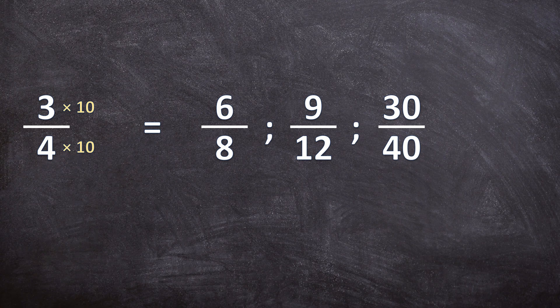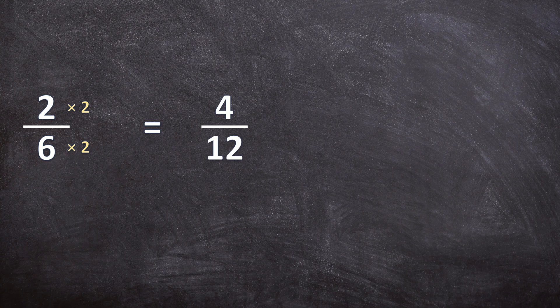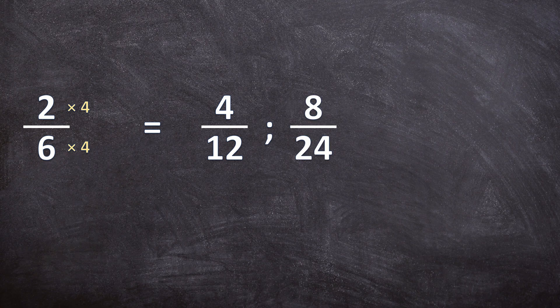Let's look at one more example. For this example, you can also find an equivalent fraction in another way, but I'll show you that lastly. First, let's multiply the numerator and the denominator by two: two times two is four, over twelve. And for the second equivalent fraction, let's multiply the numerator and the denominator by four: two times four is eight, and six times four is twenty-four.